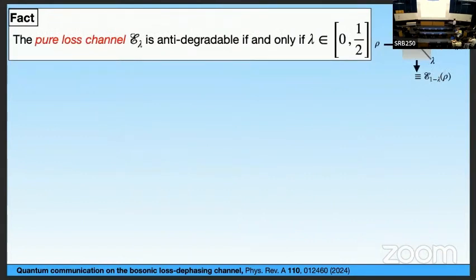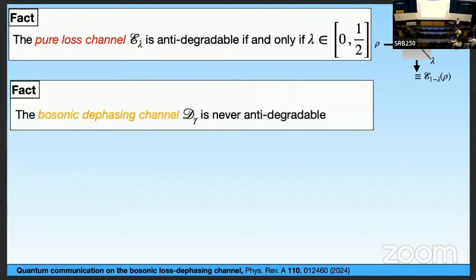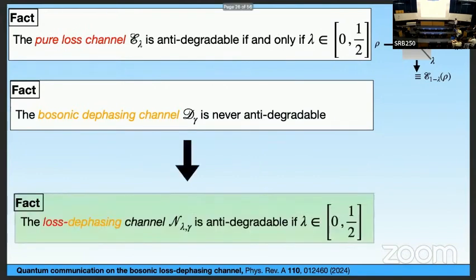As an example, the pure loss channel is anti-degradable if and only if the transmissivity lambda is in the interval [0, 1/2]. This is intuitive because one minus lambda is the probability of transmission to the environment, so when lambda ≤ 1/2 the environment receives more. The dephasing channel, on the other hand, is never anti-degradable for any finite value of gamma. Combining these facts, the loss-dephasing channel is anti-degradable if the transmissivity is in [0, 1/2].